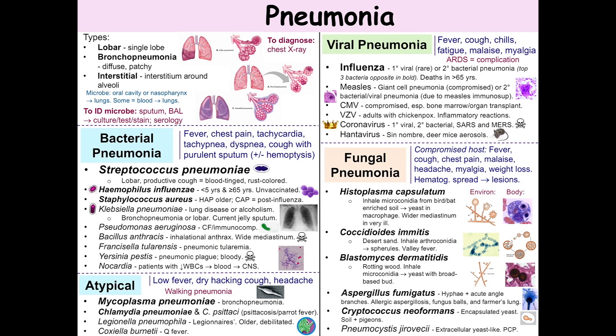On to viral pneumonia. Viral pneumonia is an atypical or interstitial pneumonia that often presents with fever, cough, chills, fatigue, malaise, and myalgia.